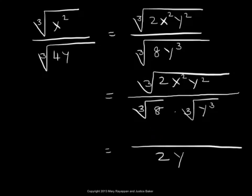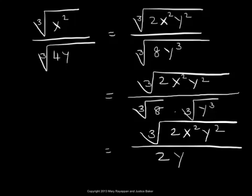So the numerator just stays as cube root of 2x squared y squared, whereas the denominator is 2y. We have taken the radical away in the denominator. So we have rationalized the denominator of the given radical expression.